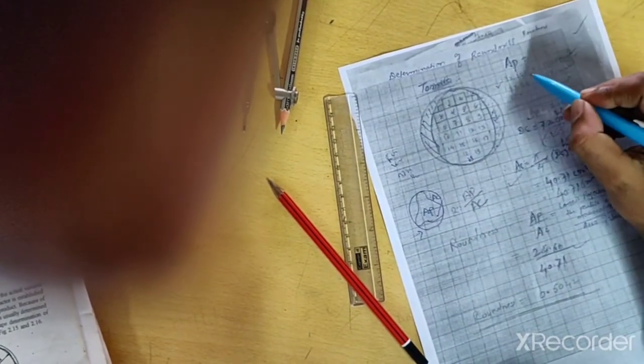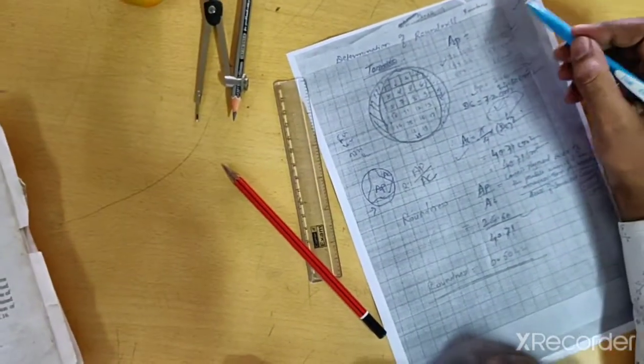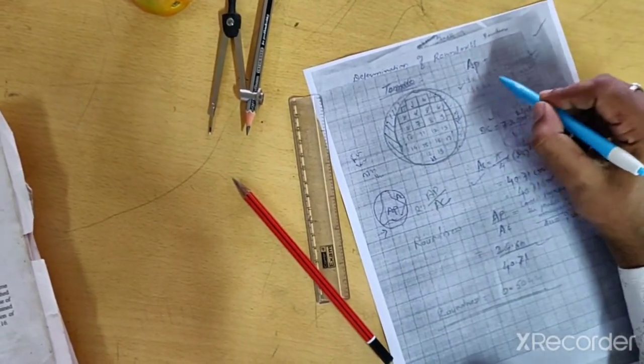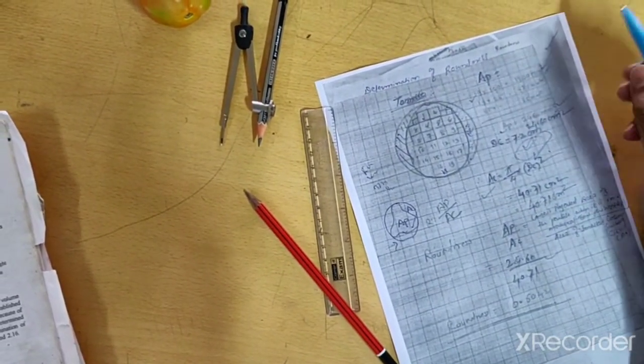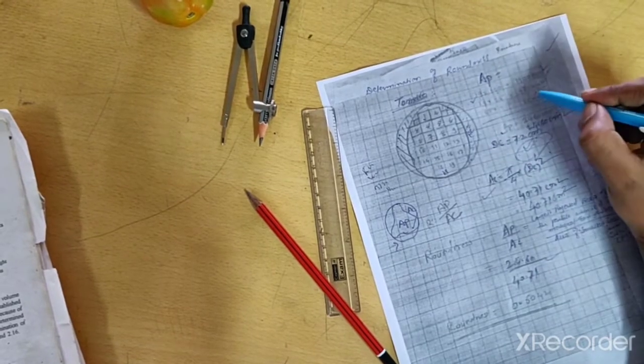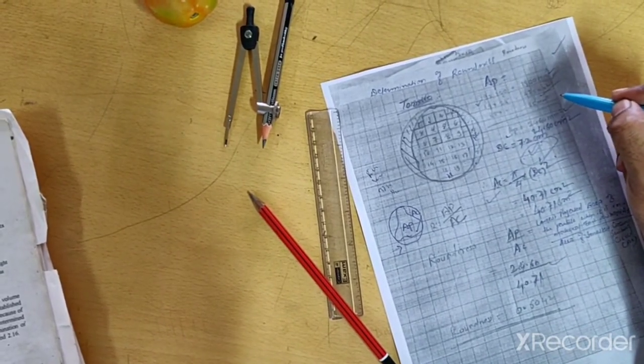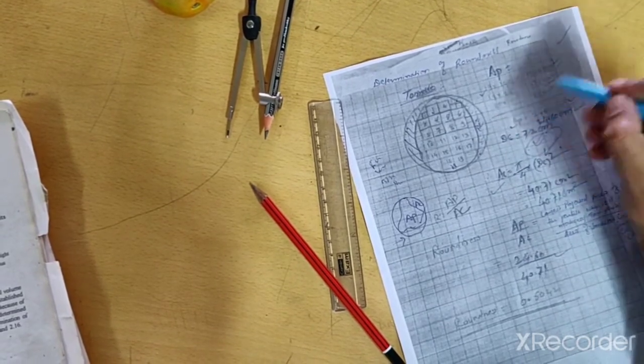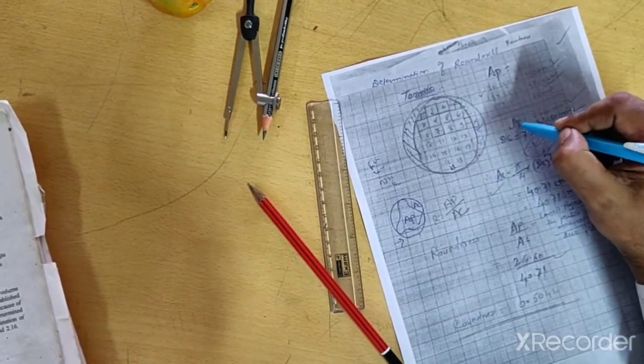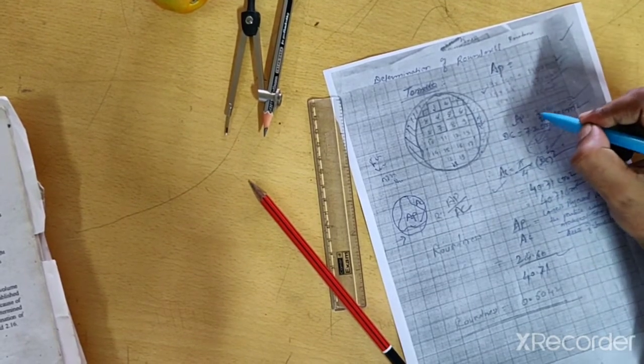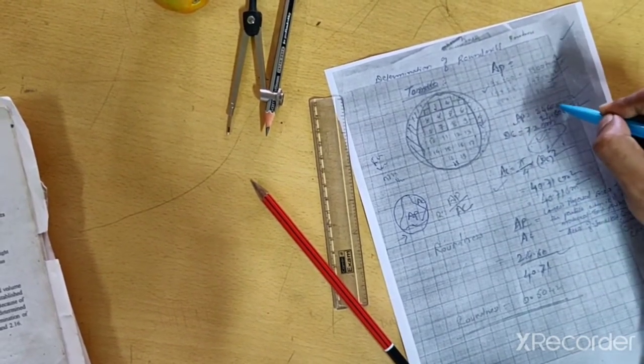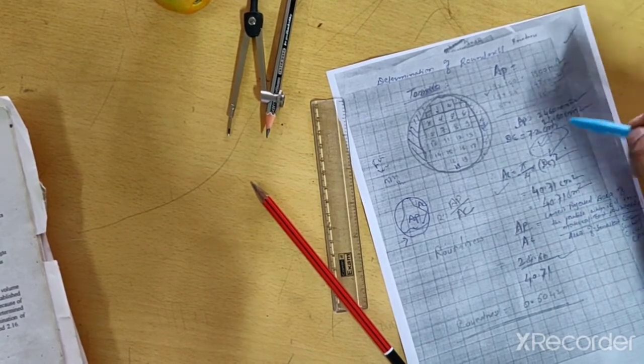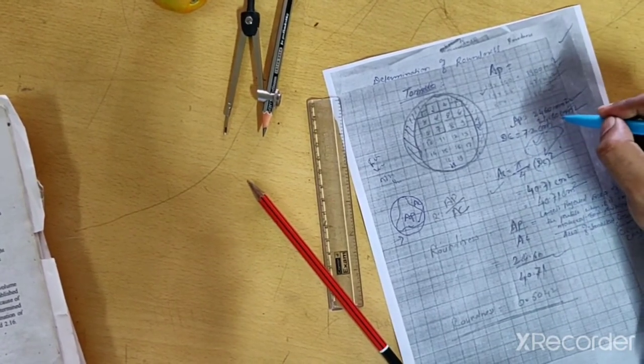Then by converting those area in mm square, full squares are 19, so 19 into 100 equals 1900 mm square. 19 into 25, we will get 475 mm square, 35 into 1, 85 mm square. By adding all these, we will get AP equals 2460 mm square. By converting to centimeter square, we will get 24.60.